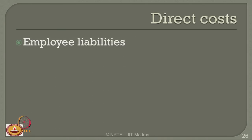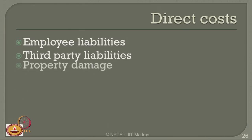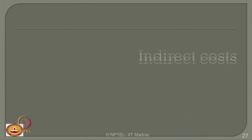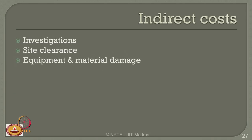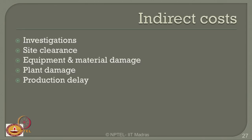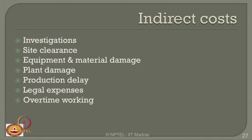Direct costs include employee liabilities, third-party liabilities, and property damage costs when an accident occurs. Indirect costs arise from investigations, site clearances, equipment and material damage, plant damage, production delay or shutdown time, legal expenditure, overtime working, and most importantly, insurance compensation, which becomes a major indirect cost in such accidents.